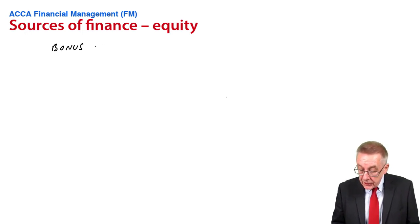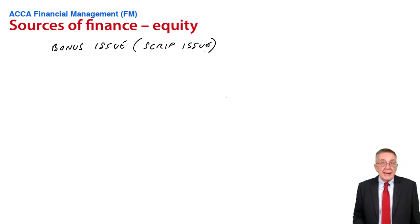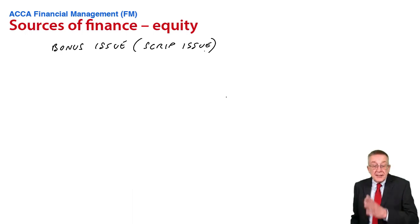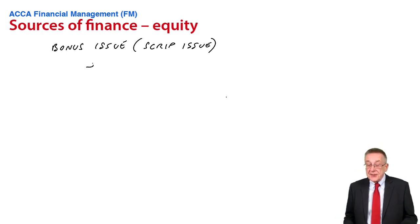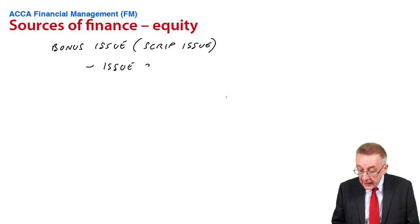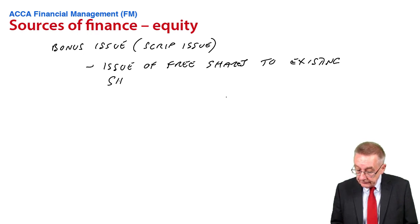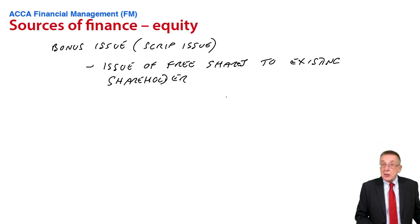First of all, a bonus issue, or a scrip issue - two words for the same thing. You should have heard about this in paper F3, or whatever you did at university. Although I appreciate this isn't a financial accounts exam, so I'm not worried about what the accounting entries would be. But a bonus issue is not a source of finance, because it's an issue of free shares to existing shareholders. And they must be issued fairly.